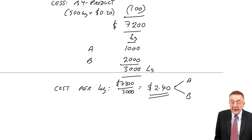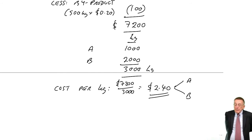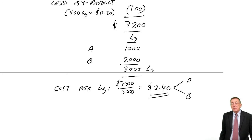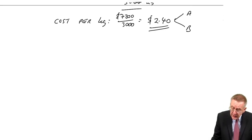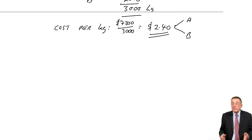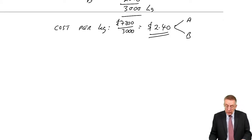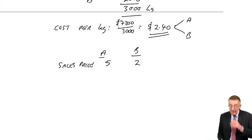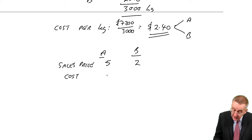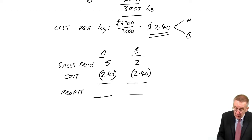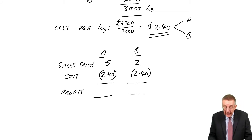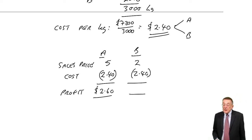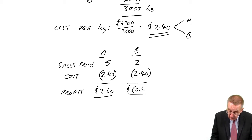That's fine and the most obvious way of doing it. However, this answer illustrates why there's another approach people take. The selling price of A is $5 and of B is $2 per kilo. We're saying the cost per kilo is $2.40 for each of them. Therefore the profit per kilo: A — maybe this is the perfume — is making a profit of $2.60, whereas B is reporting a loss of 40 cents.